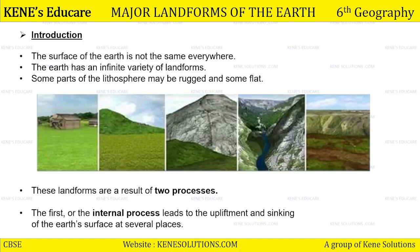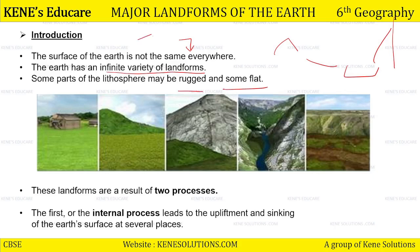Let's get started with the introduction of the chapter. The surface of the earth is not the same everywhere. Earth ka surface kahi se bhot utha hua, kahi bhot flat, kabhi depression, kabhi bhot mountainous. Regular nahi hai, ek jaisa nahi hai. The earth has an infinite variety of landforms. Some parts of the lithosphere may be rugged and some may be flat — kuch bilkul rugged, zigzag, tootay huay hoongay, aur kuch hoongay bilkul flat.